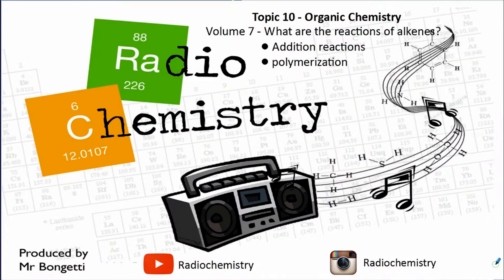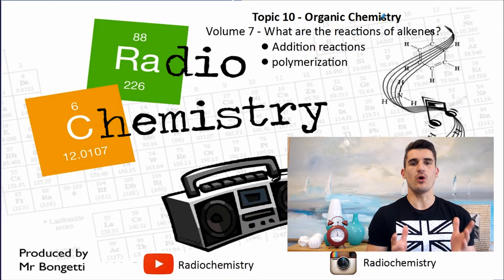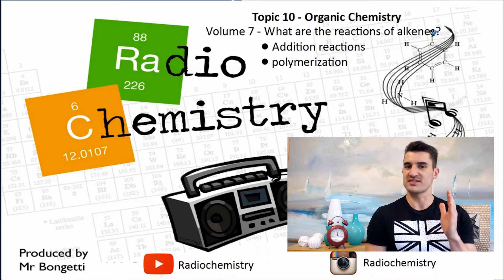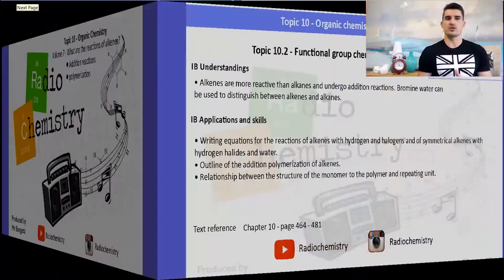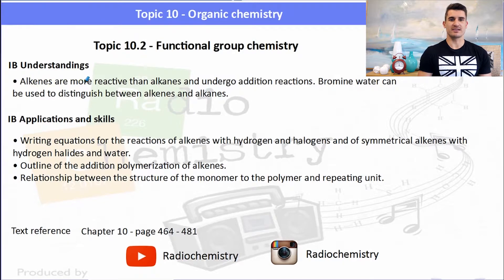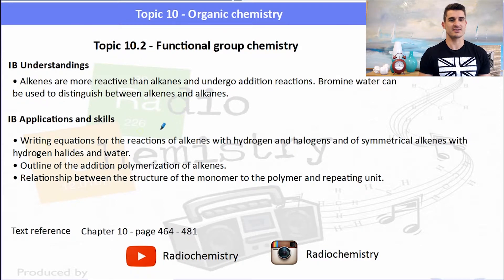Welcome to another video. This is Topic 10 Organic Chemistry, Volume 7: what are the reactions of alkenes? The IB understandings are: alkenes are more reactive than alkanes and undergo addition reactions; we can use bromine to distinguish between alkenes and alkanes; we need to write equations for reactions of alkenes with hydrogen and halogens; and we outline the formation of addition polymers.